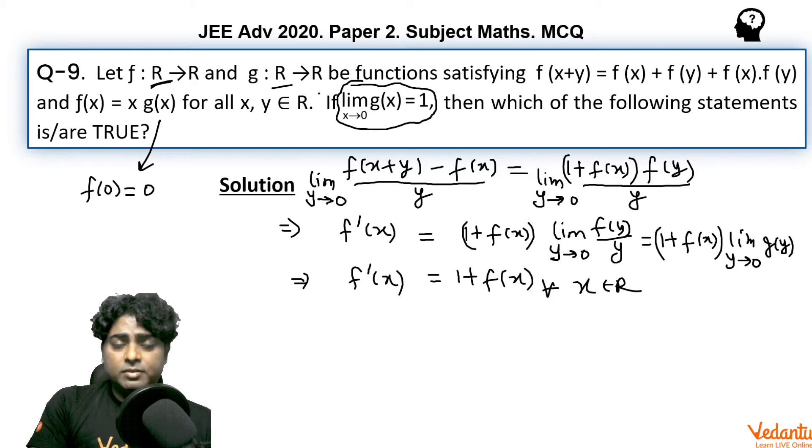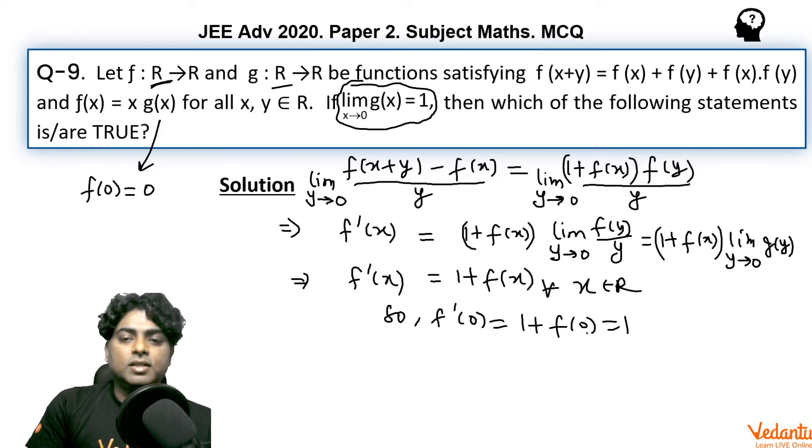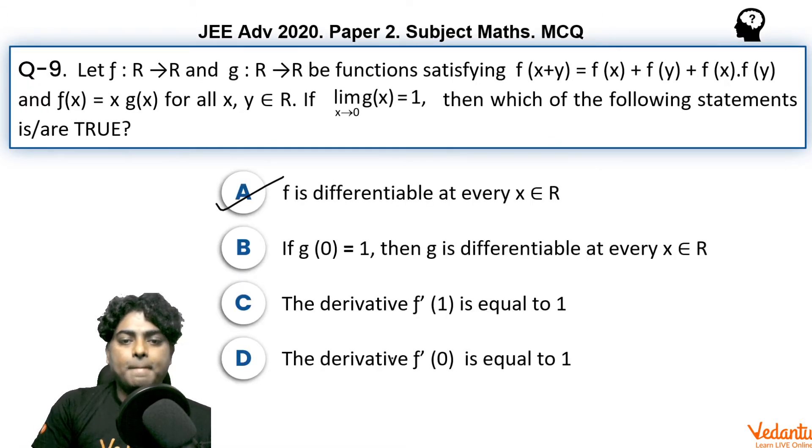So f(0) we can say directly is 0. And then f'(0) would be 1 + f(0), that is 1. So if you look at the option, option A is correct. Option D is also correct. But we need to check option B and C also.